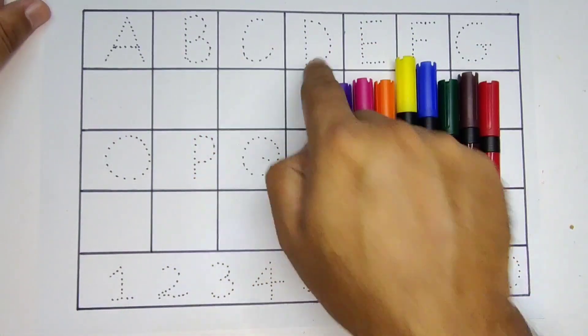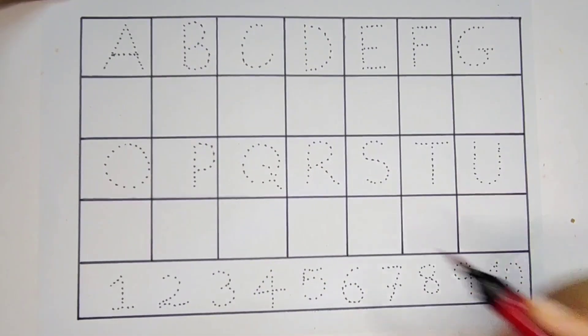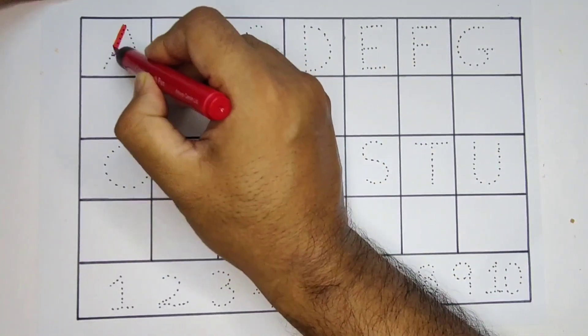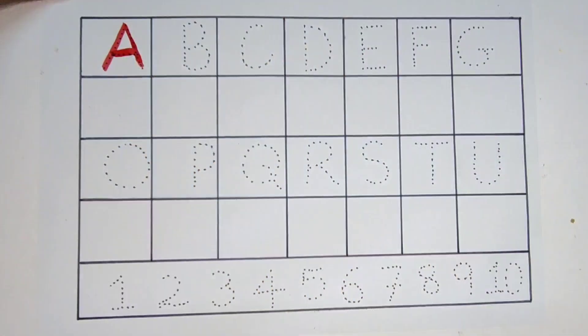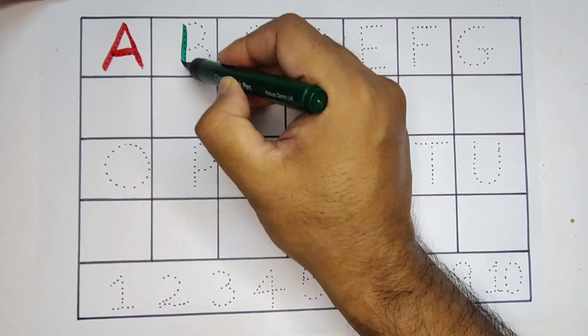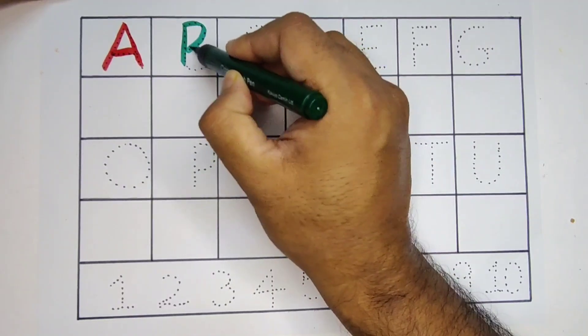Now let's learn the ABCD. A. A for apple, B. B for butterfly,